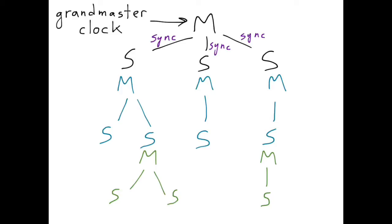Next, the clocks in the third level of the hierarchy synchronize with their masters, which are the clocks of the second level. This continues until synchronization is achieved through all levels of the hierarchy. At this point, all clocks are synchronized with the grandmaster clock.